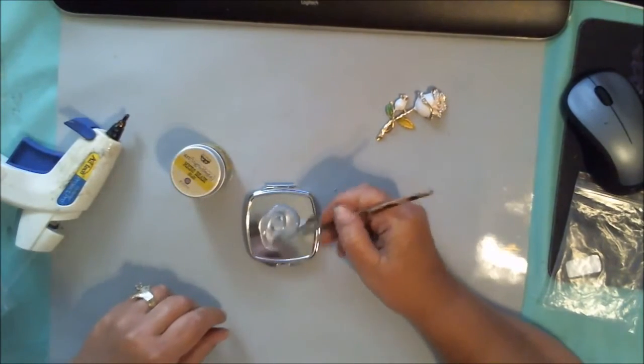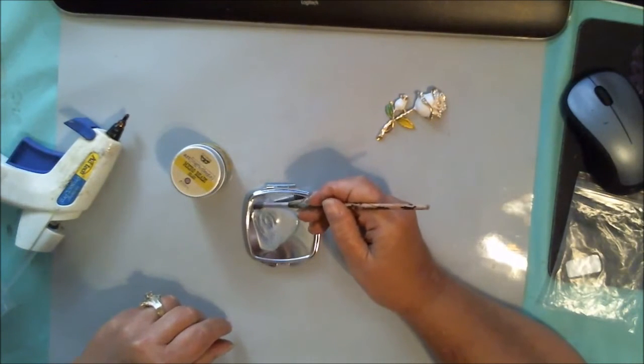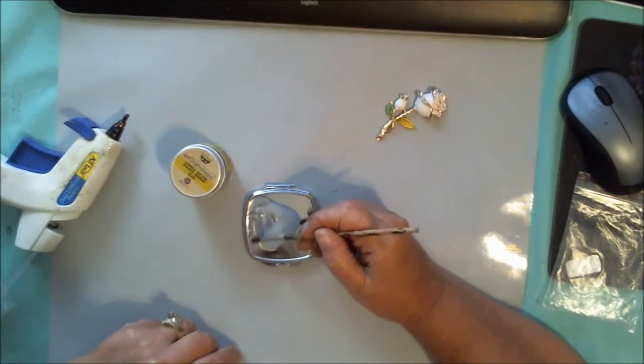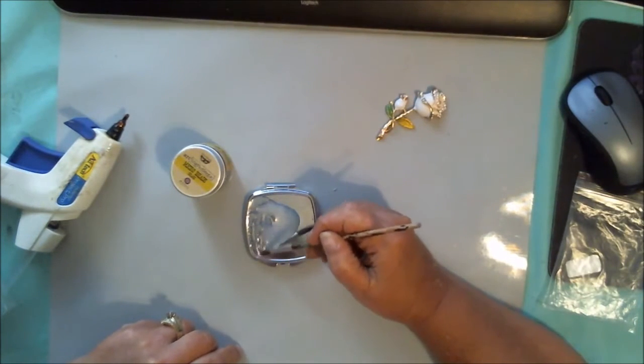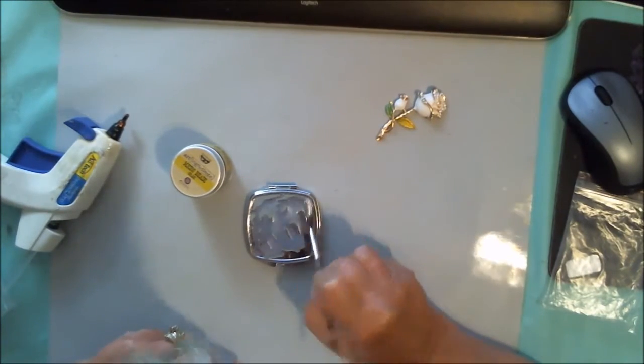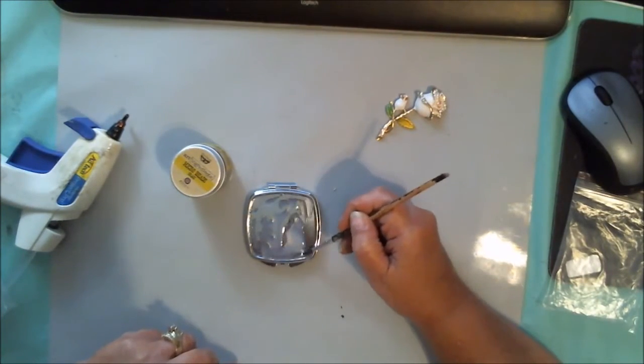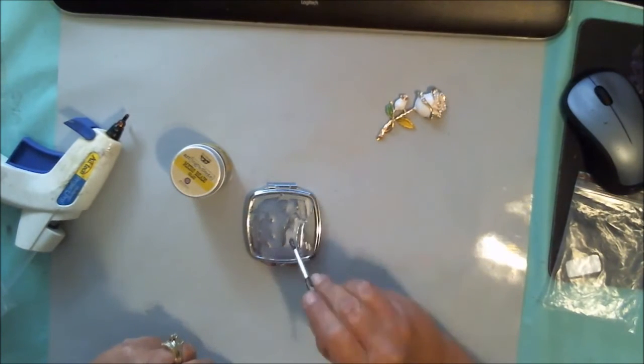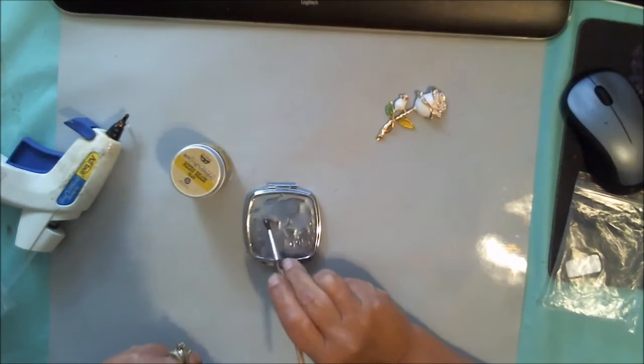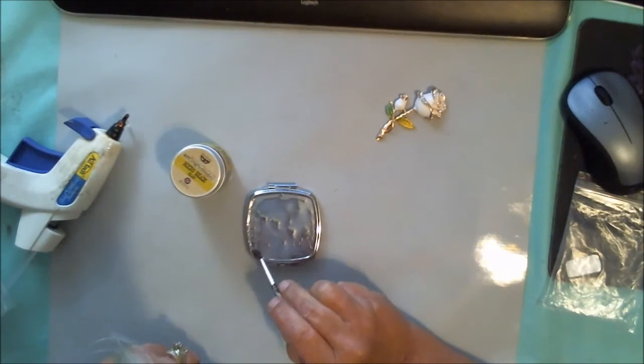I'm just going to move that around inside this little area, and it's got a little lip on it so the glue won't run out. I'm just coating the entire inside, and I'm just making sure that every spot is covered.